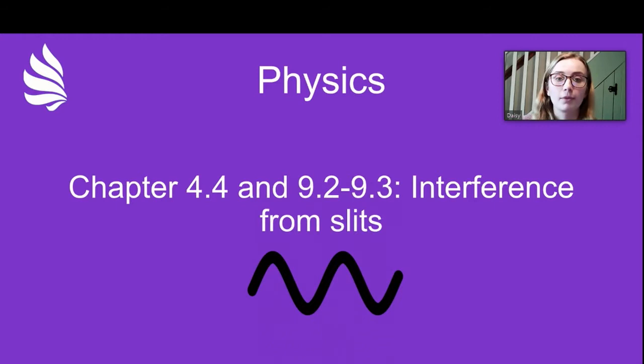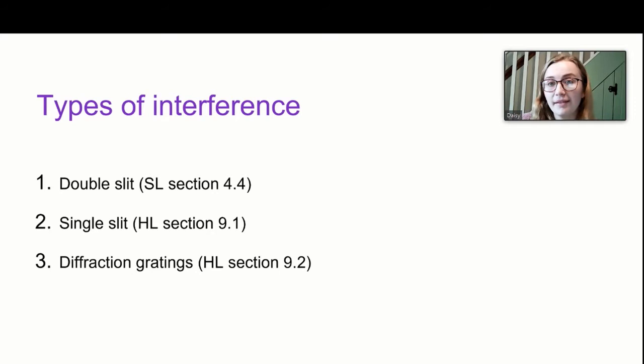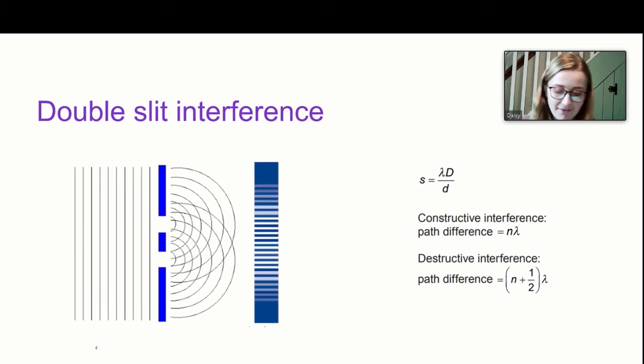In terms of what the syllabus says, if you're a standard level student all you need to worry about is how light interferes when it passes through a double slit setup. If you're a higher level student you need to understand that as well as the single slit interference pattern and diffraction gratings.